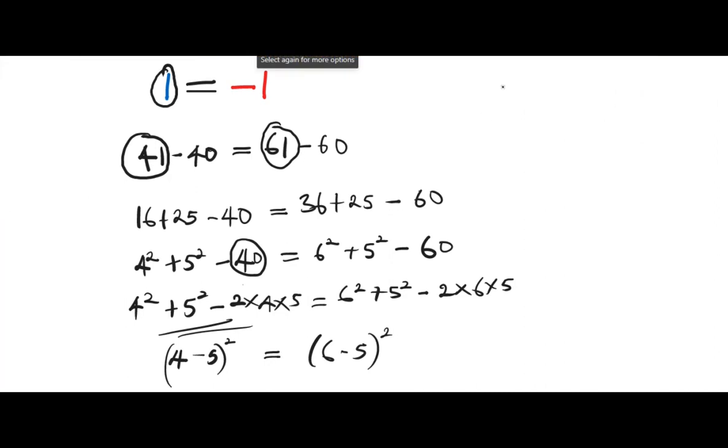So let's proceed on this other side of the board. So we have 4 minus 5 raised to the power of 2 equals to 6 minus 5 raised to the power of 2. If we take the square root of both sides, this will cancel this square and this will cancel this square.